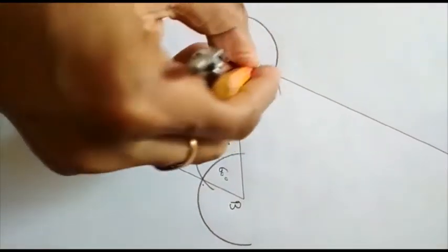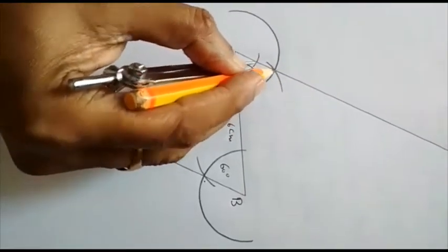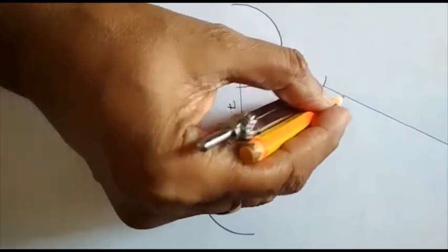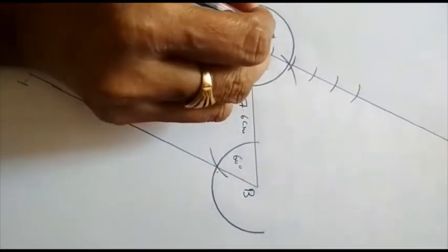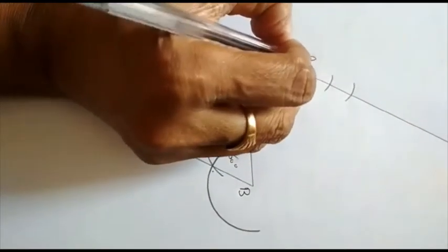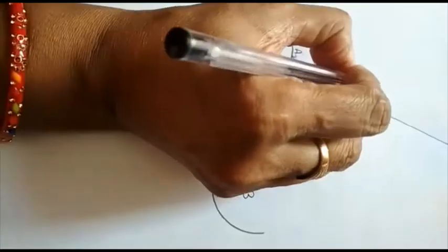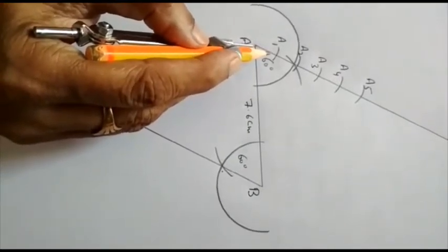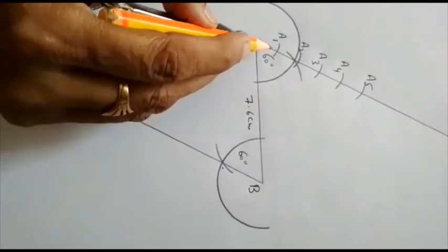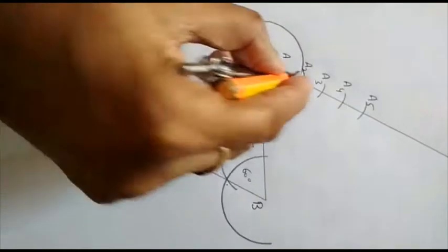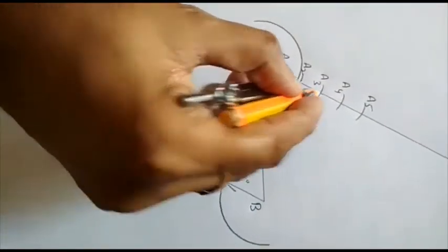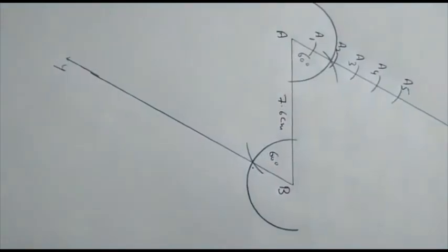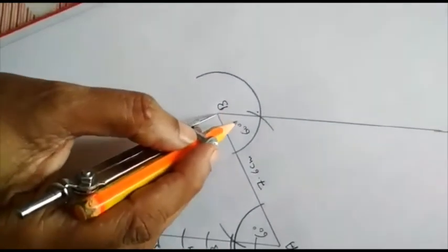As we have to divide AB in 5:8 ratio, with A as center and any radius I will draw 5 equal arcs: A to A1, then A1 to A2, then A2 to A3, then A3 to A4, then A4 to A5. Remember the first arc is marked from point A and whatever radius is selected, that will remain the same throughout.